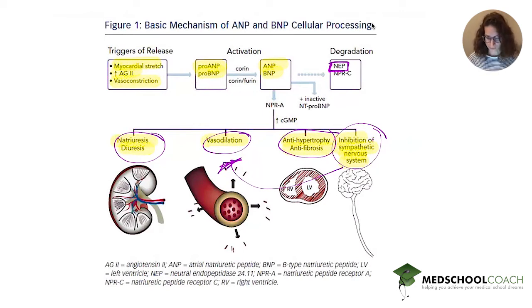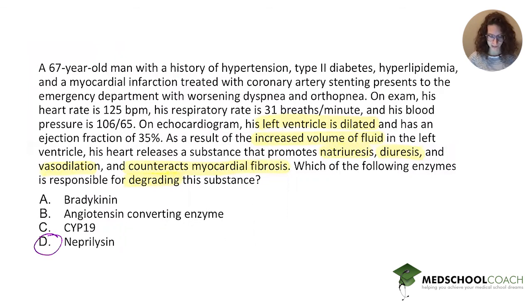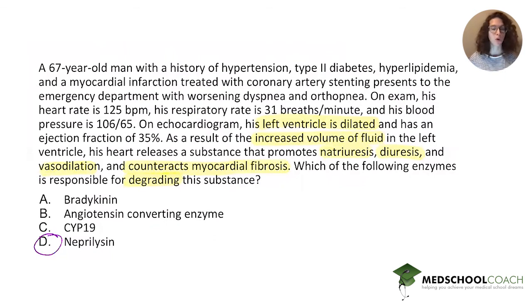That is the answer to the question. We've determined which peptide is being referred to — since the question says the substance is released by the heart, it could be either ANP or BNP. It doesn't matter which one, because they do the same thing and they're degraded by the same substance, which is neprilysin. This is also pharmacologically important because there are drugs that inhibit neprilysin, inhibiting the breakdown of ANP and BNP and allowing for the promotion of all of those beneficial effects in people with these kinds of problems.